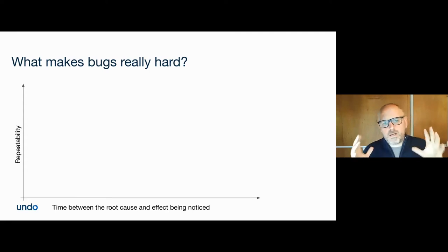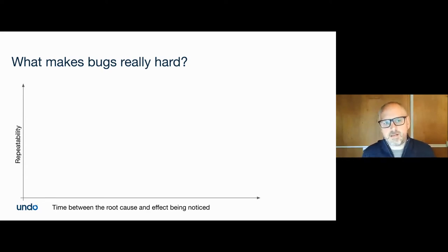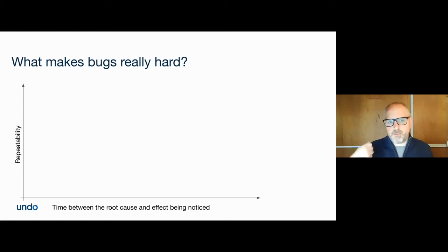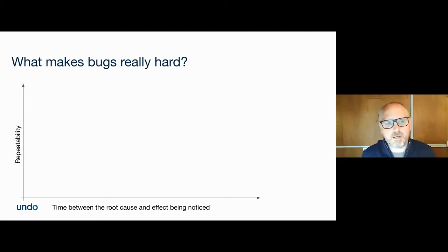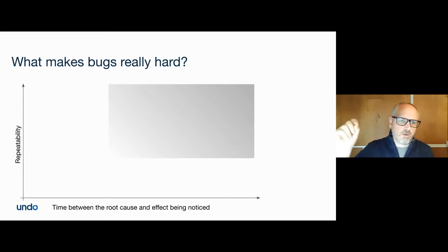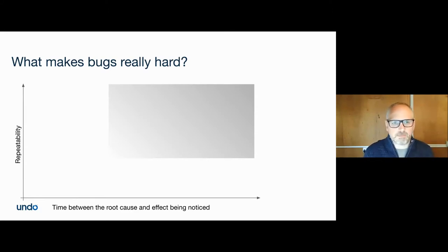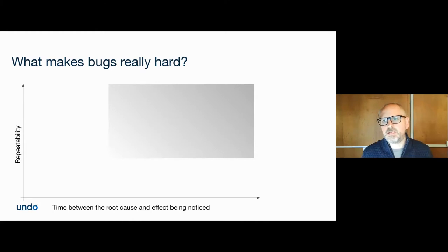All the time goes into the smaller number of bugs where there's a long time between the bug and you noticing its effect, or every time it runs it does something different — maybe one in a million, or maybe every time it's different. With logging or a debugger, I can't home in on the bug if it's non-repeatable. Life gets really interesting in the top right corner of this matrix: bugs that are non-repeatable with a long elapsed time.